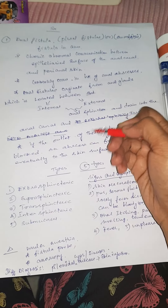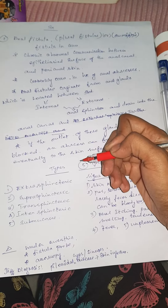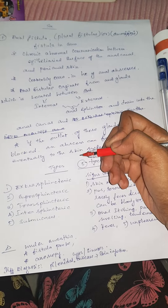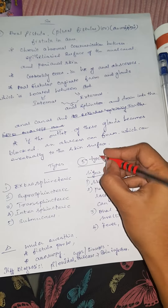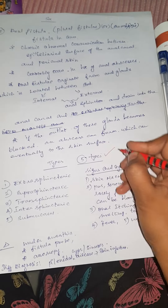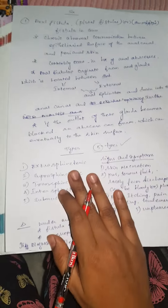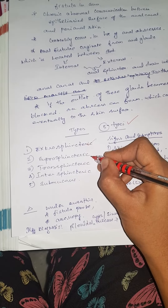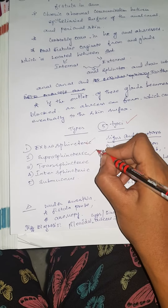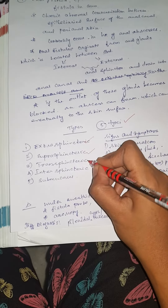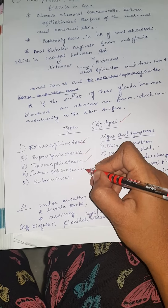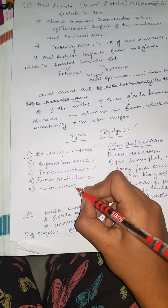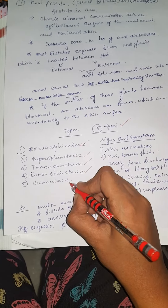There are 5 types of anal fistula. First is extrasphincteric, second is suprasphincteric, third is transsphincteric, fourth is intersphincteric, and fifth is submucosal.